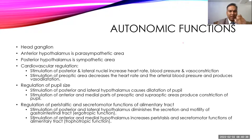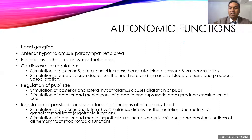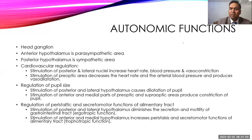For cardiovascular functions: stimulation of the posterior or lateral nucleus of the hypothalamus increases sympathetic activity, increasing heart rate, causing vasoconstriction, and ultimately increasing blood pressure. Stimulation of the pre-optic area increases parasympathetic activity, decreasing heart rate and causing vasodilation, leading to a decrease in blood pressure.